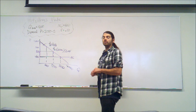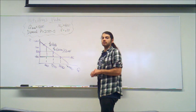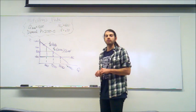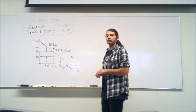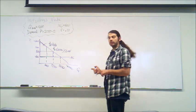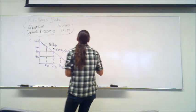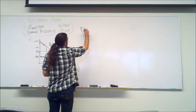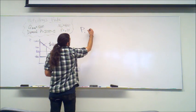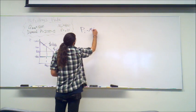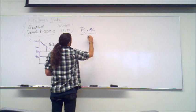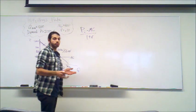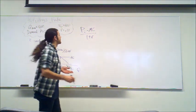Now, basically what Hotelling's Rule states is that the marginal net revenue increases at the rate of interest. Hotelling's Rule can be written as: (P_i minus MC) over (1 plus R)^i over multiple periods is going to be equal.